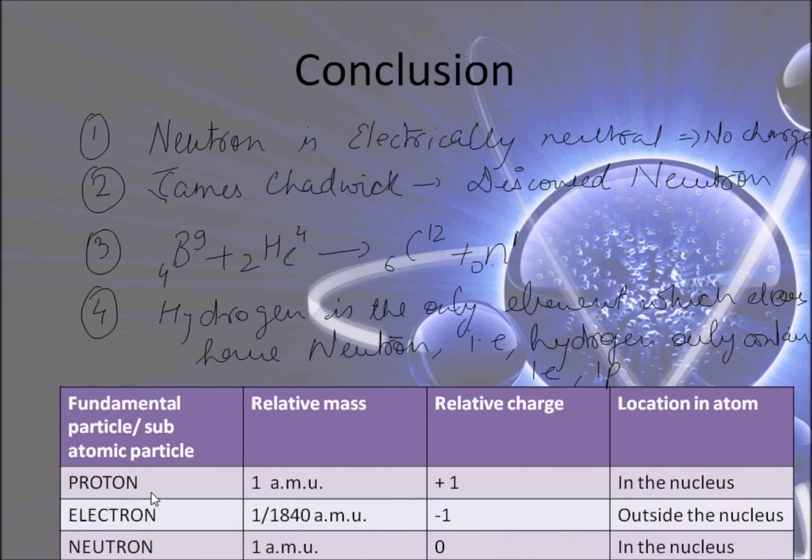So let's conclude all the three fundamental particles. Here are the relative mass and relative charge. The proton has 1 amu of relative mass with the relative charge positive one, which resides in the nucleus of the atom. Electron with 1/1840 amu of the hydrogen atom, that is minus one with the relative charge, which resides outside the nucleus of the atom. Here the neutron with 1 amu, having no charge, and also resides in the nucleus of the atom.